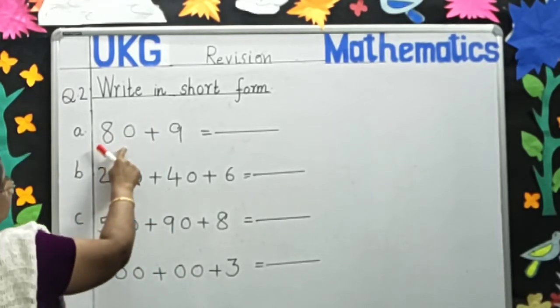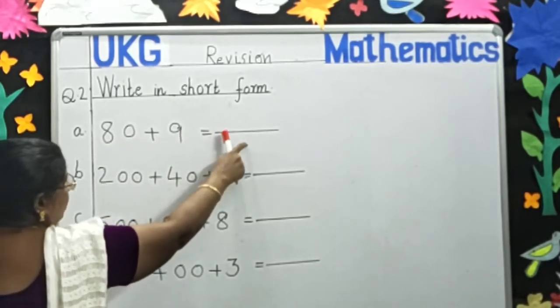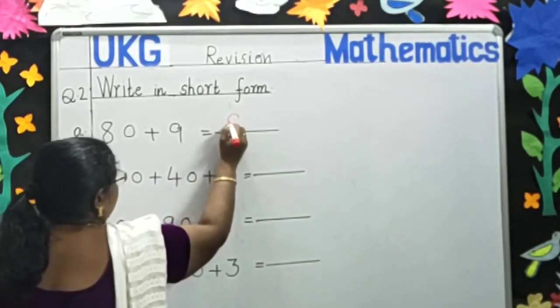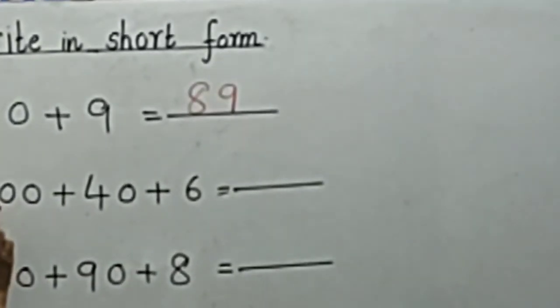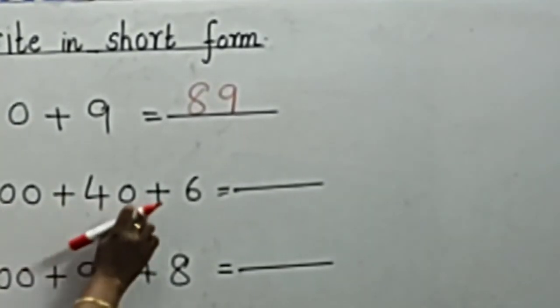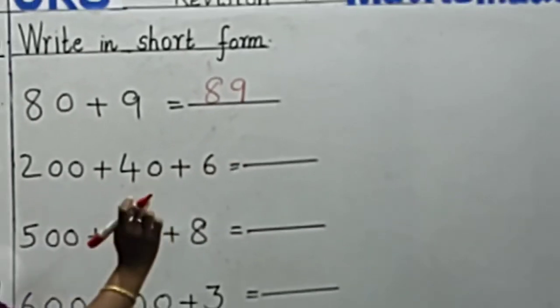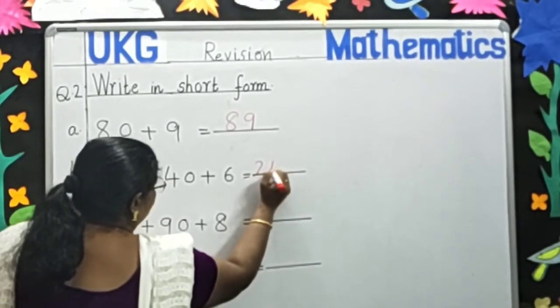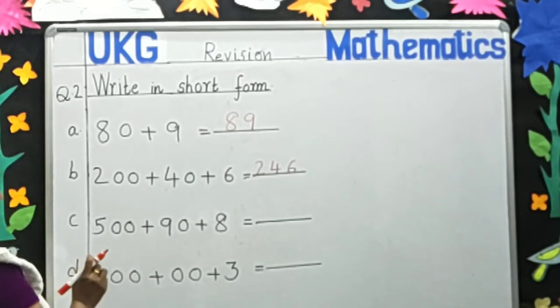80 plus 9 is dash. 80 plus 9 is 89. We will remove the zeros. 200 plus 40 plus 6 is dash. Remove all the zeros and write 2, 4, 6. This is 246.